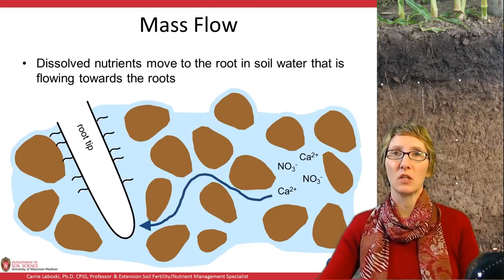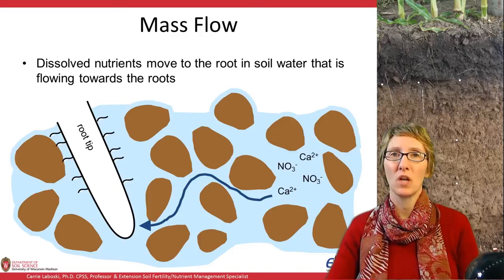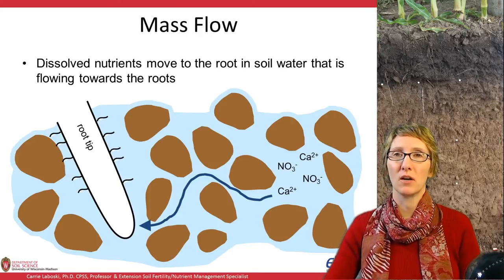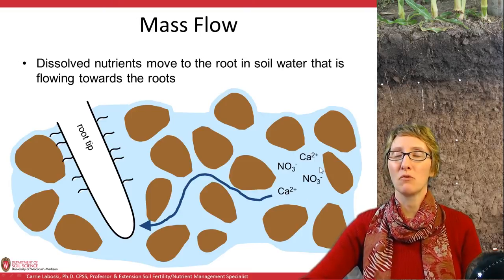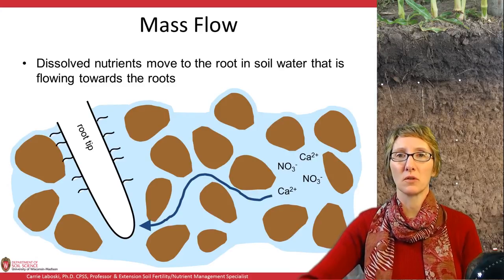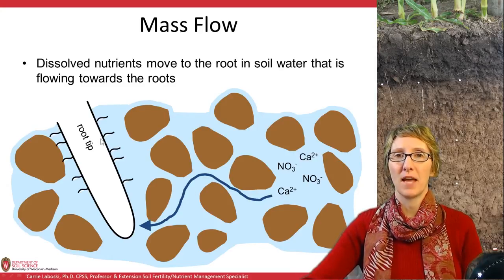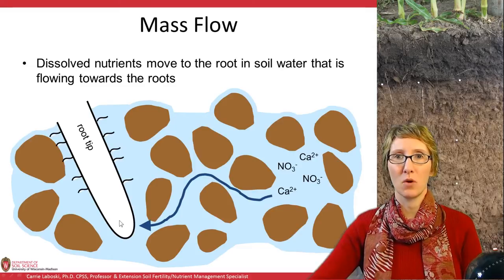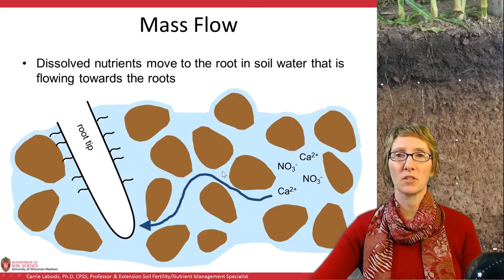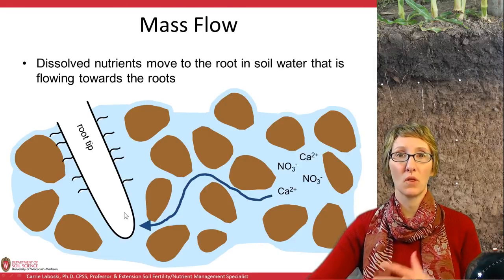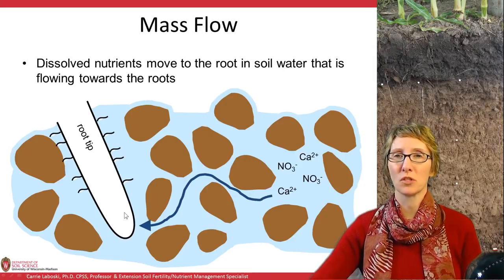To specifically look at mass flow: this is where dissolved nutrients are in the soil solution — calcium and nitrate, for example, are dissolved and move in water as it's flowing to the root. That root is taking up water, and as the plant uses water and water flows toward the root tip, all these nutrients are just moving along with that flow path of water. It's just mass flow.